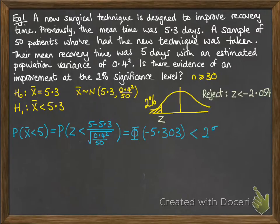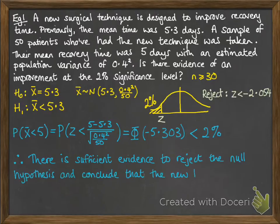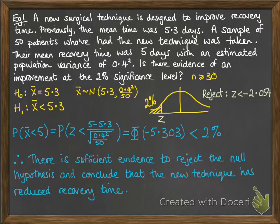We can then say that since our value is less than -2.054, the probability is less than 2%, and therefore there is sufficient evidence to reject the null hypothesis and conclude that the new technique has reduced recovery time.